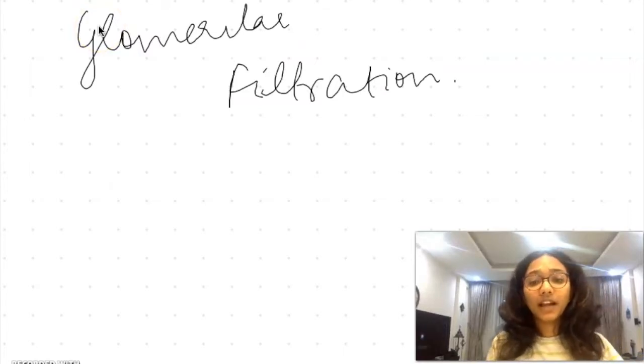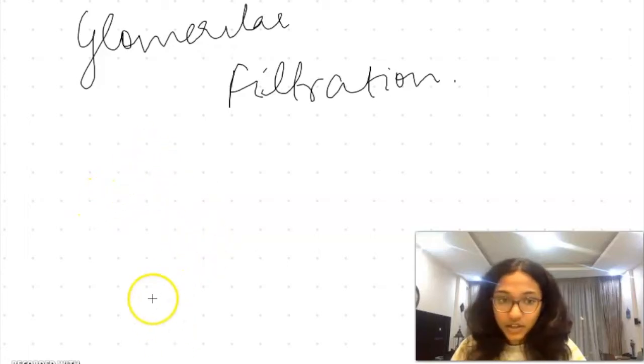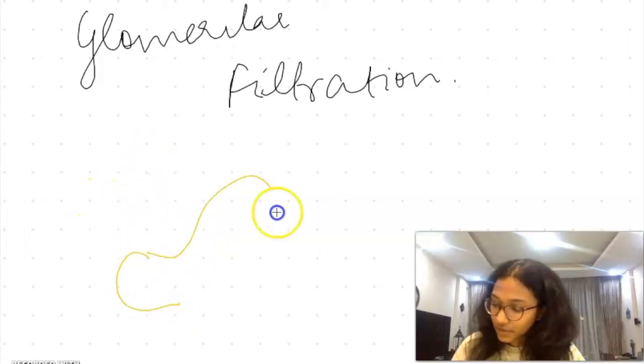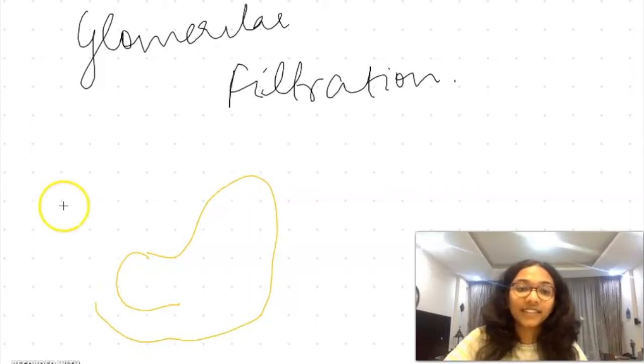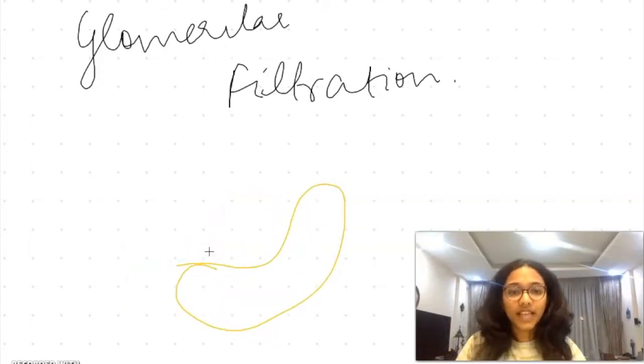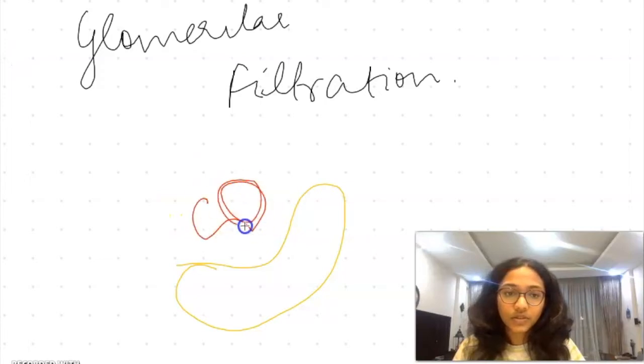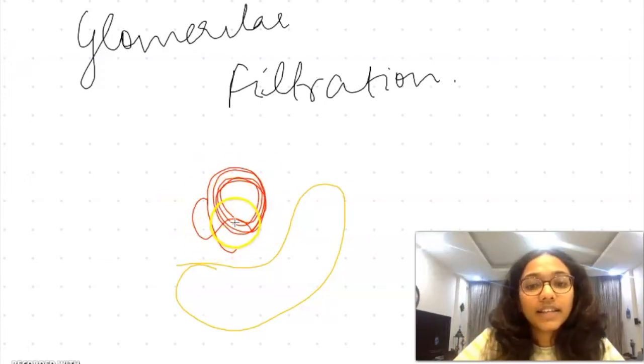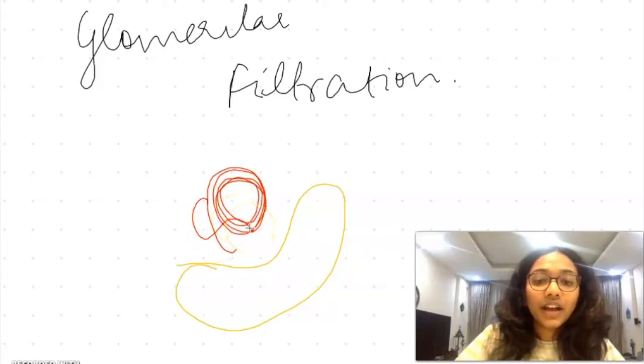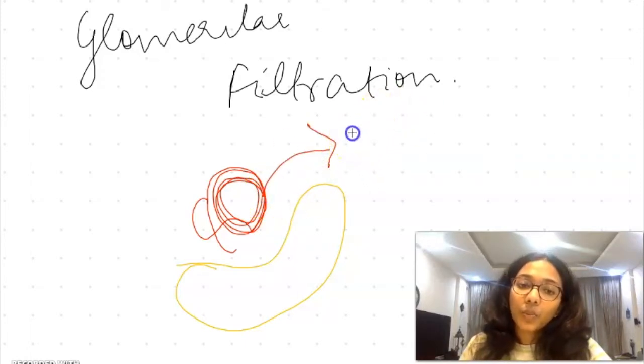Let's come to the first process, that is glomerular filtration. The blood has entered the glomerulus. In the glomerulus, the entire blood is separated according to its size. There are three membranes present. This is Bowman's capsule and this is the glomerulus.